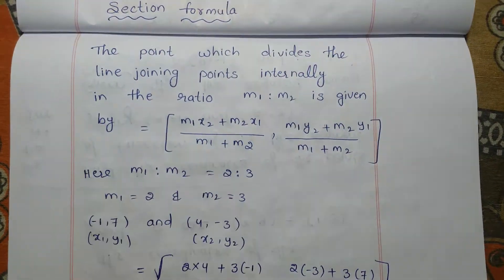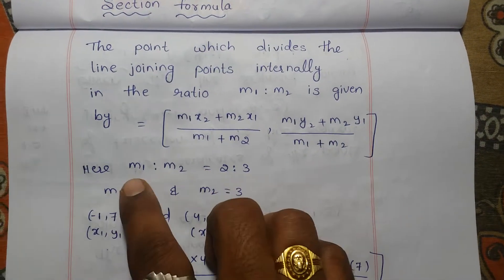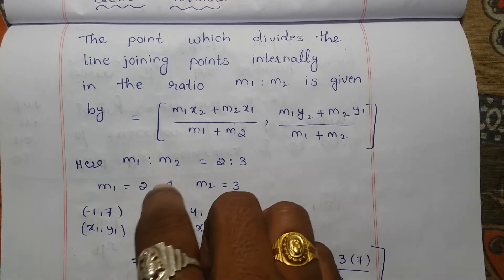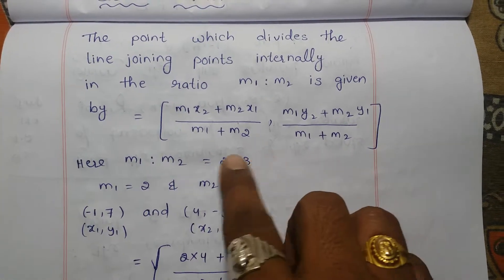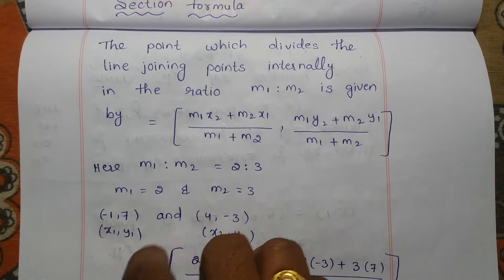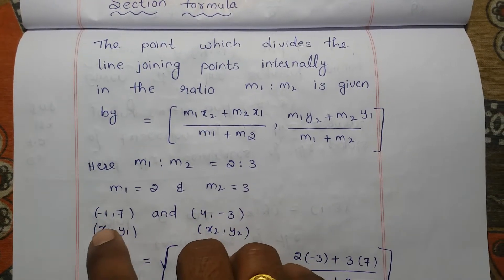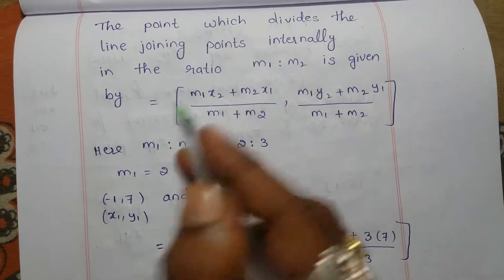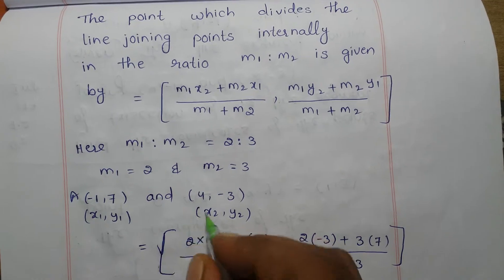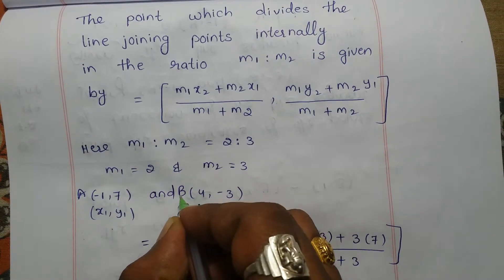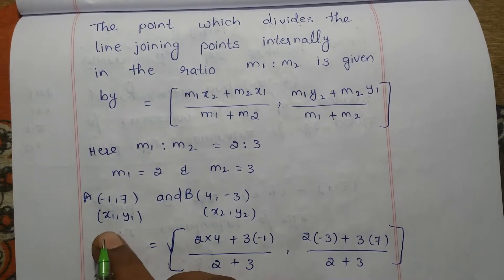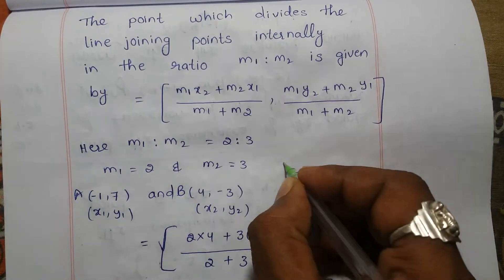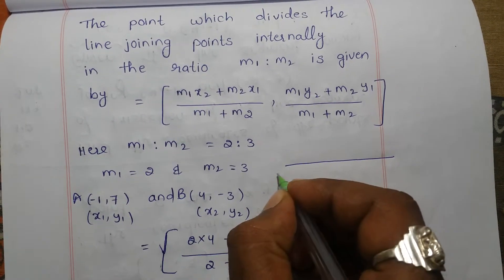So here in the given question, the ratio is given: m1 is to m2 is equal to 2 is to 3. So m1 value is 2, m2 value is 3. The points are also given — the line joining points: A is (−1, 7) and B is (4, −3). So this is x1, this is y1, this is x2, this is y2.